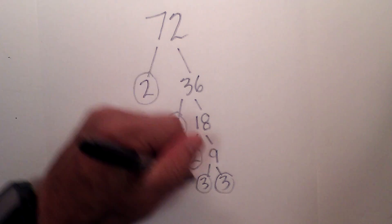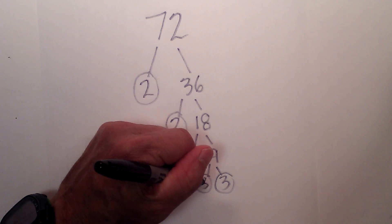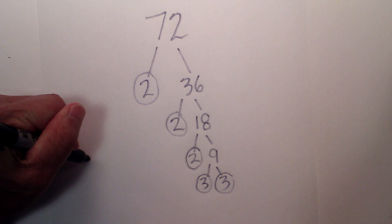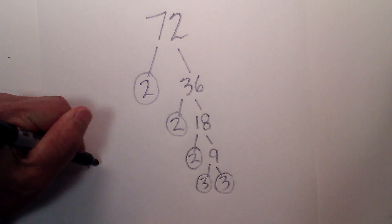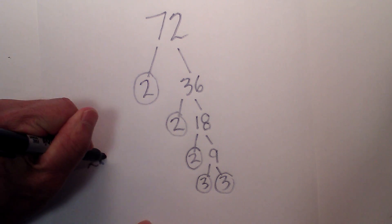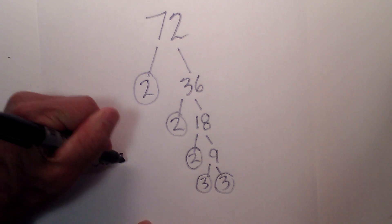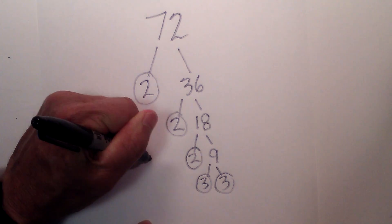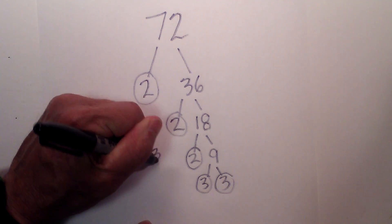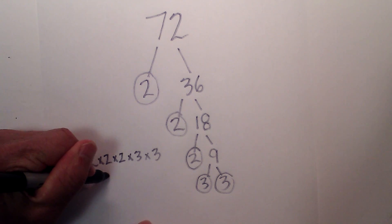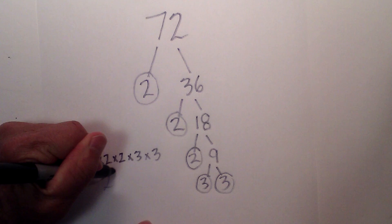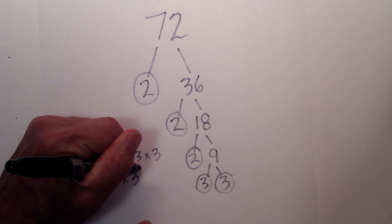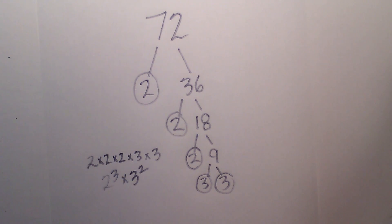So now I am down to all prime numbers. The prime factorization is 2 times 2 times 2 times 3 times 3. Or I could write that as 2 to the third times 3 squared.